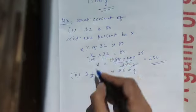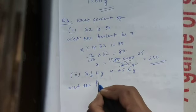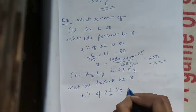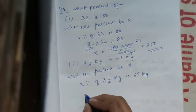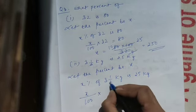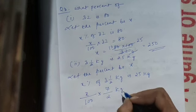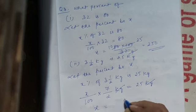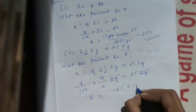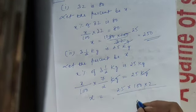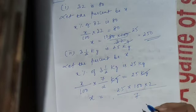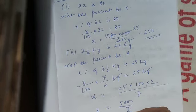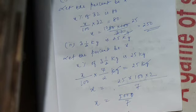Another similar question: what percent of 3 and a half kg is 25 kg? Let the percent be x. So x percent of 3½ kg equals 25 kg. Write 3½ as 7 by 2. x divided by 100, times 7 by 2, equals 25. The kg units cancel. Bring 100 and 2 to the numerator, and 7 goes to the denominator: x equals 25 times 2 times 100 divided by 7, which is 5000 by 7.